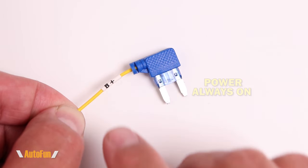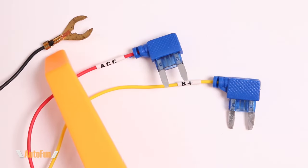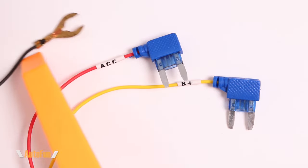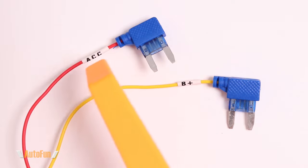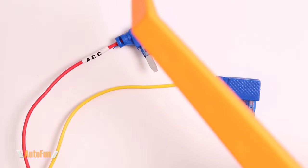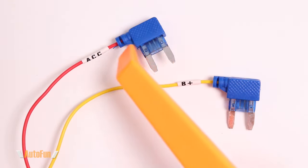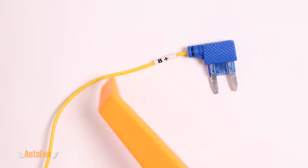To recap: this has to go to ground which is normally a metallic portion of the car, ACC has to go to a power source that only has power when the car is in the accessory position or when the car is running, and B plus has to go to a power source that has power all the time.